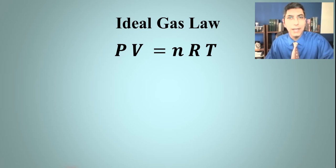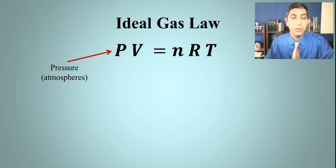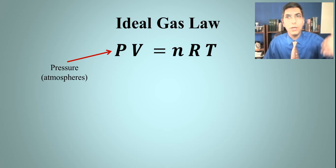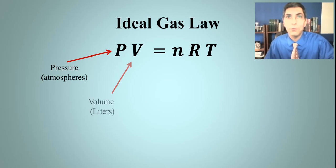Let's see what all these variables stand for. P is the pressure of a gas measured in atmospheres. In order for this equation to work, we have to use the units that are prescribed here. If we get something that's not in that unit, we're going to have to convert it. V is for volume and that's in liters. If we're not given volume in liters, we're going to have to convert it.